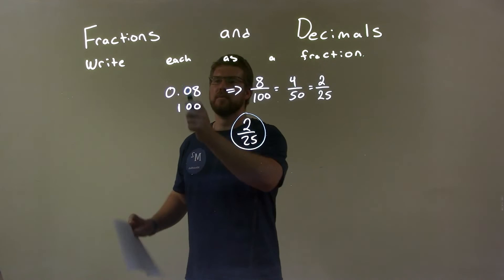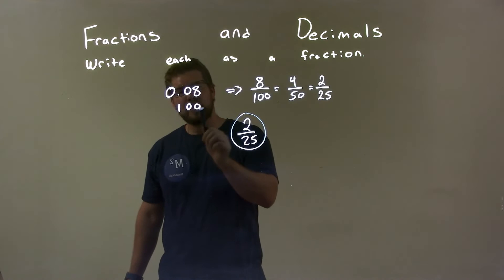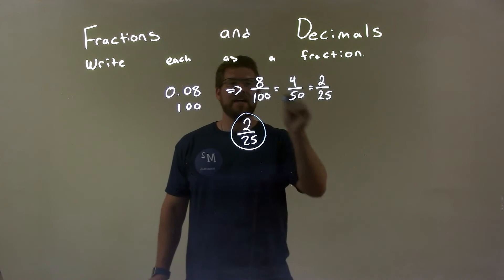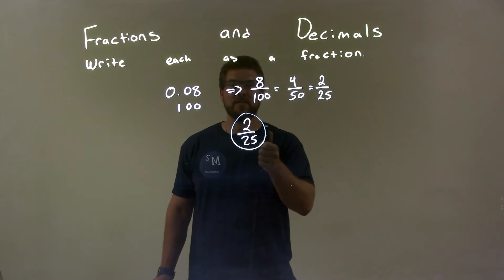So quick recap, we're given 0.08 and I have to write that as a fraction. Well, use my little technique here, I know that's the same thing as 8 over 100. And simplifying that fraction, it simplifies to 2 over 25, which is our final fraction answer.